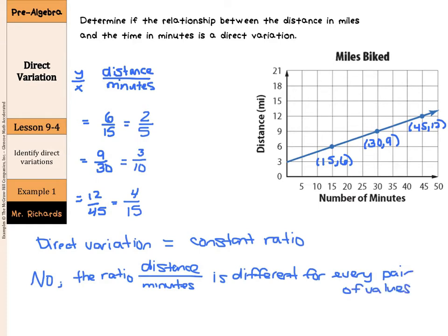Now if each one of these was two-fifths, you had two-fifths, two-fifths, two-fifths, then we would have a direct variation. But since these ratios are different, we do not have a direct variation.